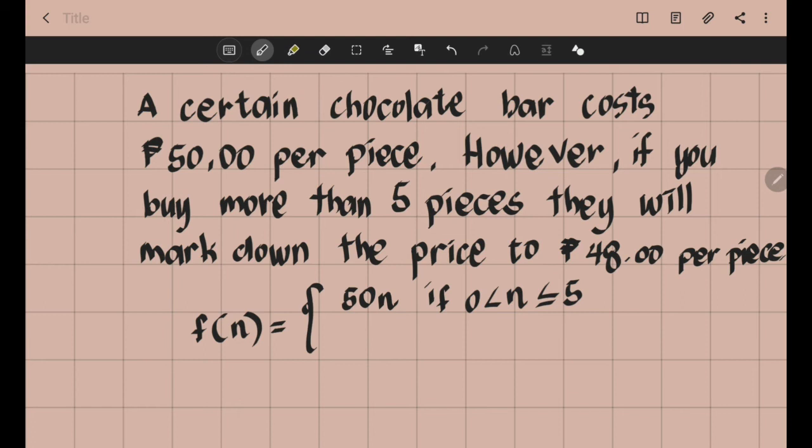But if you will buy more than 5 chocolate bars, the price will be 48 pesos each. So formula number 2 will be 48 multiplied by N, the number of chocolate bars, if the number of chocolates that you will buy is greater than 5.